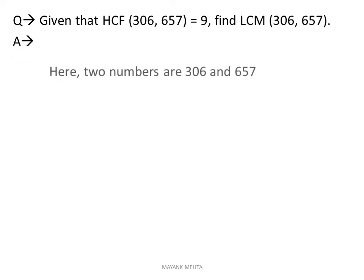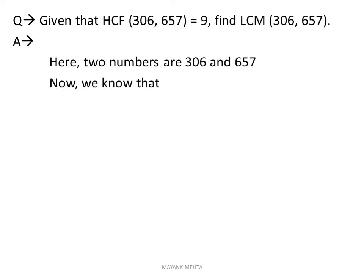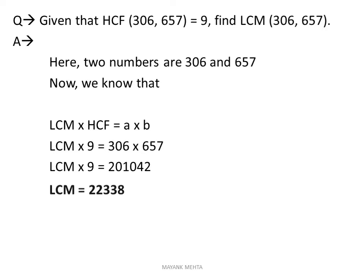Now — textbook exercise 1.2 sum: given that HCF of 306 and 657 is 9, find the LCM of 306 and 657. हमारे दो numbers 306 and 657 हैं। HCF दिया हुआ है = 9, LCM ढूंढना है। Formula use करेंगे: LCM × HCF = A × B, so LCM × 9 = 306 × 657. Therefore LCM = 22,338.